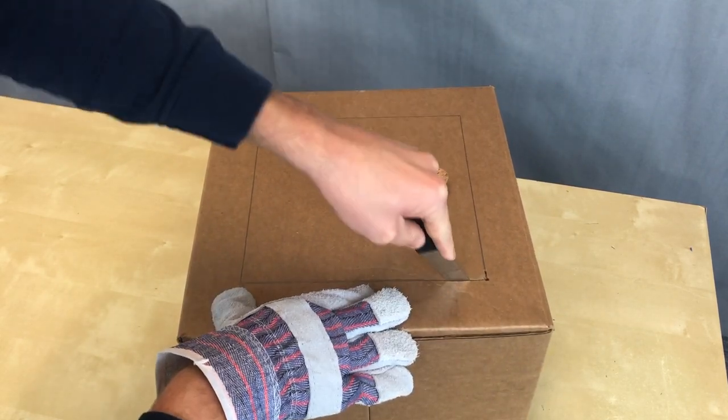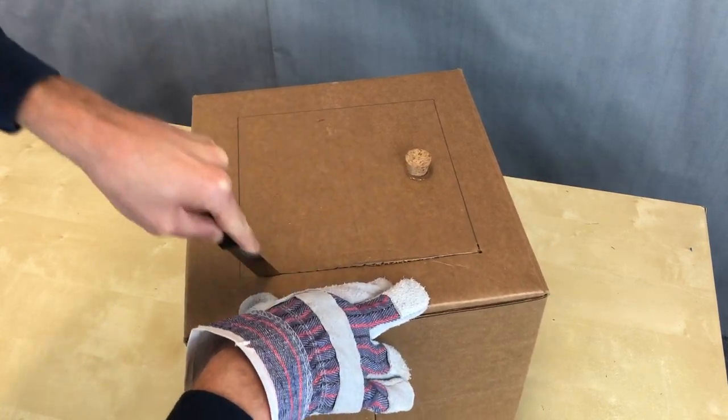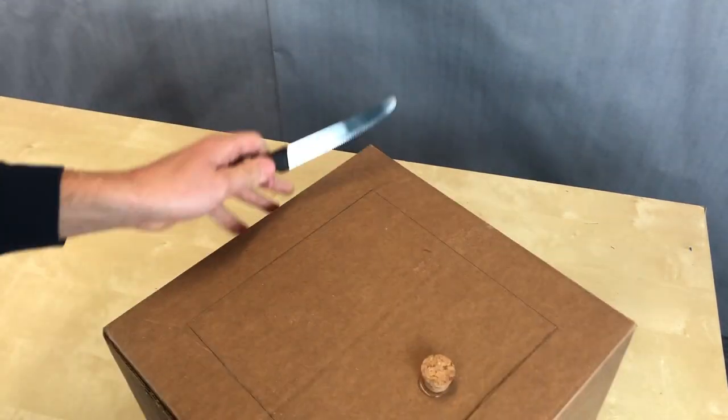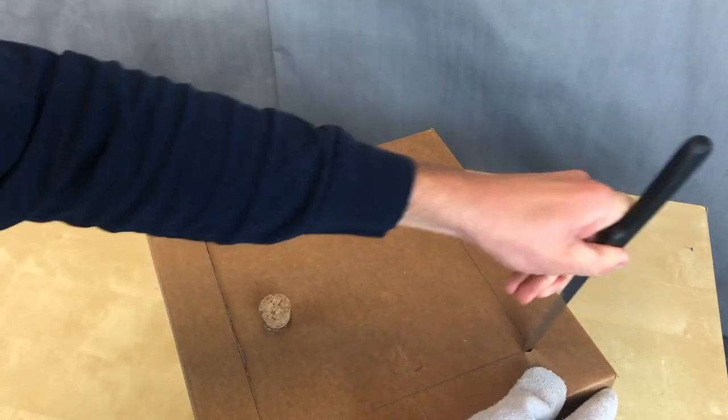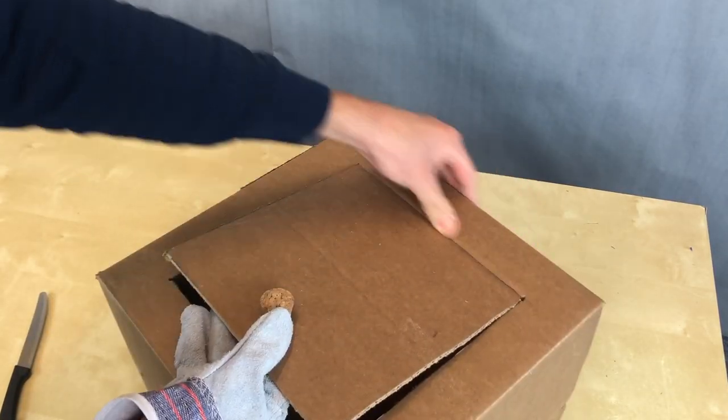Work the knife into the starter hole by rocking it back and forth. Then once the knife is in, you can use a sawing motion to cut the cardboard. Cut the three sides of the cabinet door, but make sure not to touch the side opposite to the knob—this is going to be the hinge of your door.